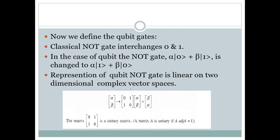Next, we will see how a classical NOT gate can be represented in quantum terms. You know that a NOT gate with input 0 gives output 1. For a qubit NOT gate, alpha|0⟩ plus beta|1⟩ is transformed to alpha|1⟩ plus beta|0⟩. This can be represented in a vector space, where to get beta and alpha swapped, the unitary matrix is [[0,1],[1,0]].